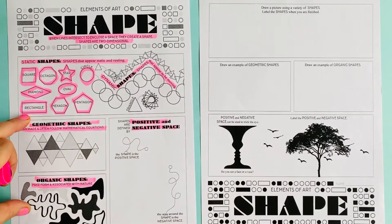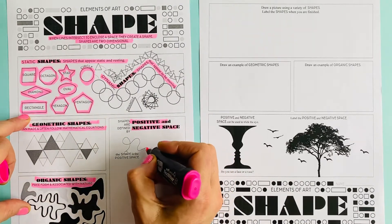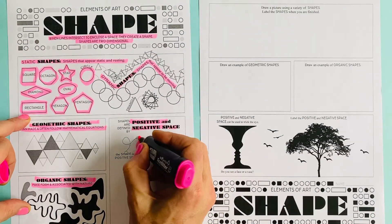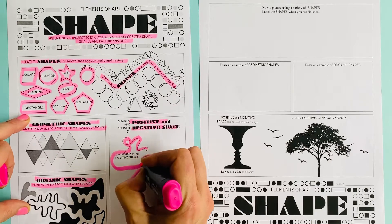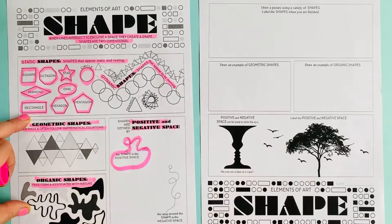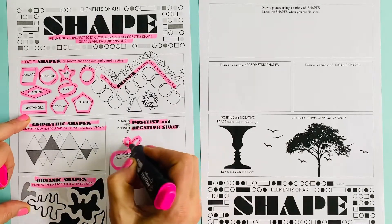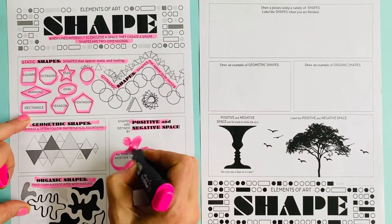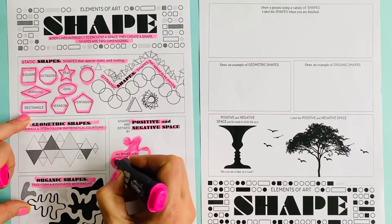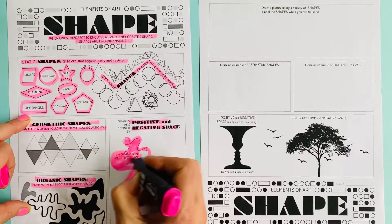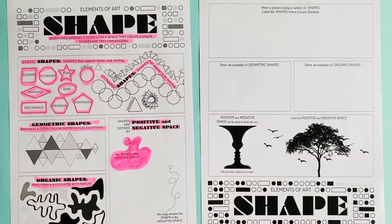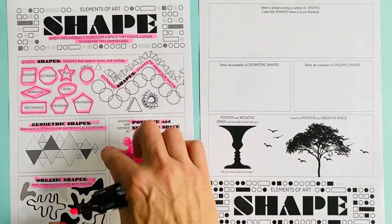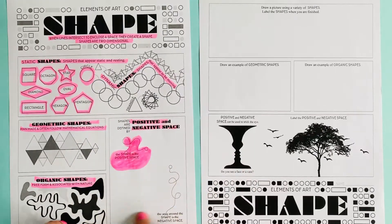Shapes are defined by positive and negative space. I'm going to change this shape a little bit. If you imagine that this is the shape, here is the positive space — the shape itself is the positive space.